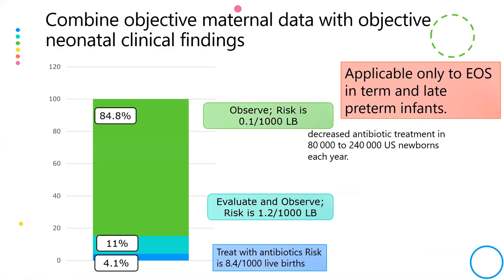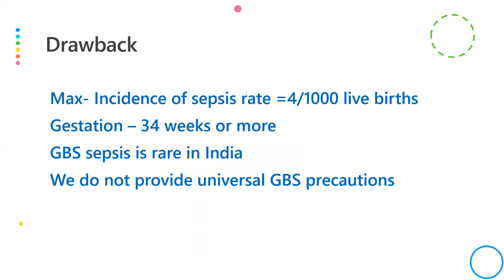Is this calculator suitable for our setting? When evaluated on 600,000 babies, 85% escaped antibiotics with very low infection risk, 11% were observed without antibiotics, and only 5% received antibiotics, with a sepsis risk of 8 per 1000. The limitation is that the calculator's maximum incidence is 4 per 1000, while in our setting up to 30 per 1000 live births may have culture-positive sepsis. It also applies only to late-preterm and term babies, and GBS is rare in India.